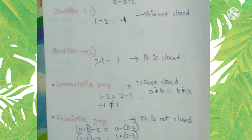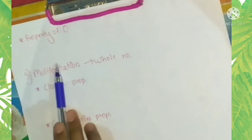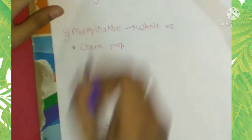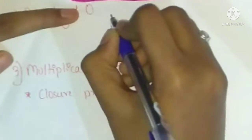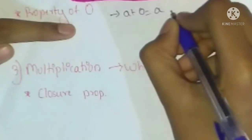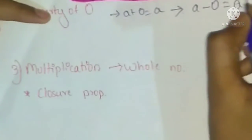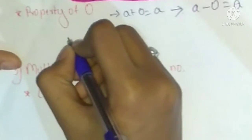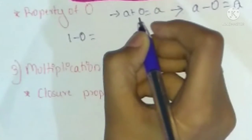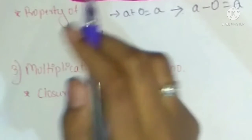Now let us discuss the property of zero in subtraction. Similar to additive identity in addition — where a plus zero equals a — here also a minus zero equals a. Let us check: one minus zero equals one. So the number remains the same, and this is the property of zero in subtraction on whole numbers.